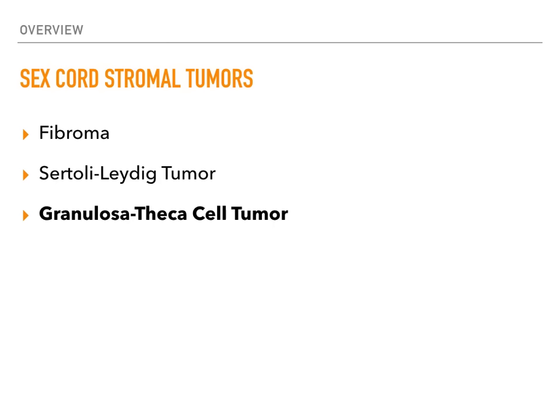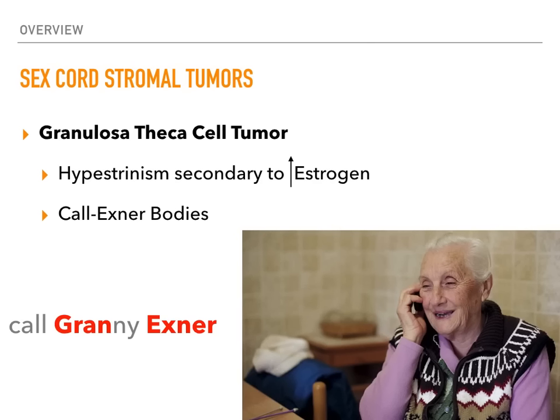The last sex cord stromal tumor is the granulosa theca cell tumor. There are two high-yield findings: first, hyperestrinism secondary to increased secretion of estrogen; second, Call-Exner bodies. The mnemonic: you can't forget to call your granny Exner — 'granny' for granulosa theca cell tumor, and 'Exner' for Call-Exner bodies. Call your granny Exner. Say it a few times and you'll never forget it.